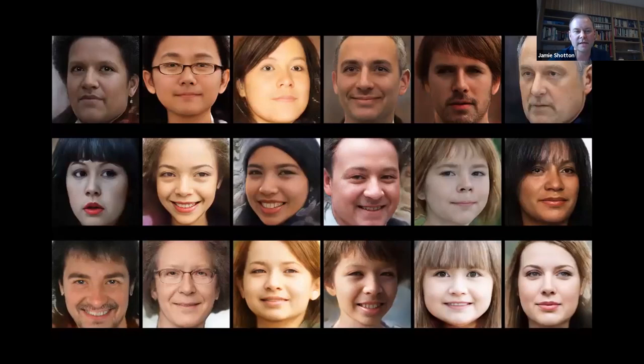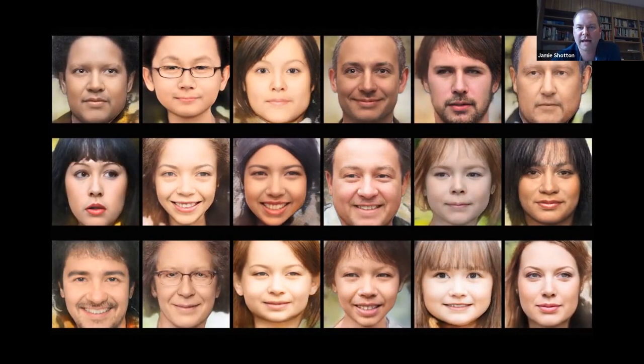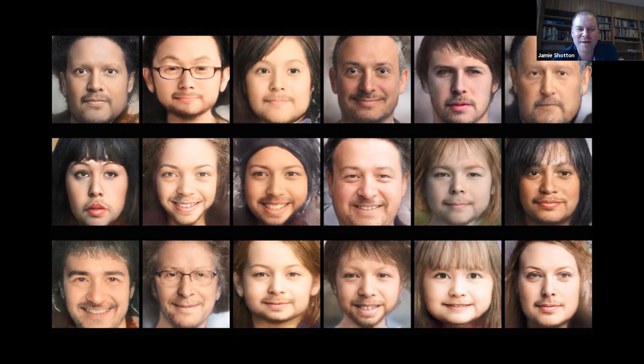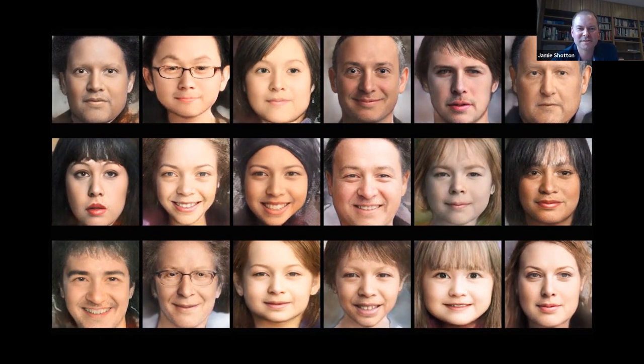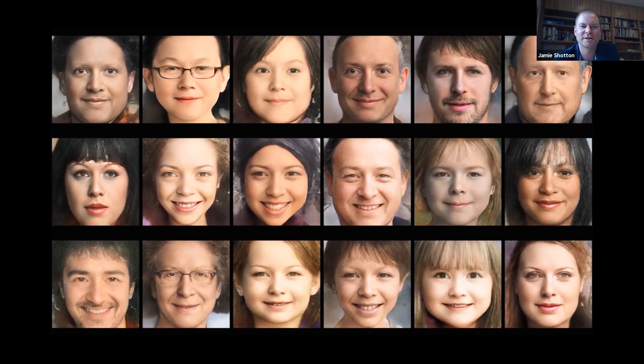Which means that then we can at runtime take a real image, encode it to now the shared latent space, and then replace various parameters using the synthetic data encoder. And if you do this, you can start to get the kinds of results that you see here. So again, head pose variation, lighting variation, you'll see gaze control in a moment. Hair, facial hair attributes, including some that definitely aren't in our training set, and things like facial expression as well.